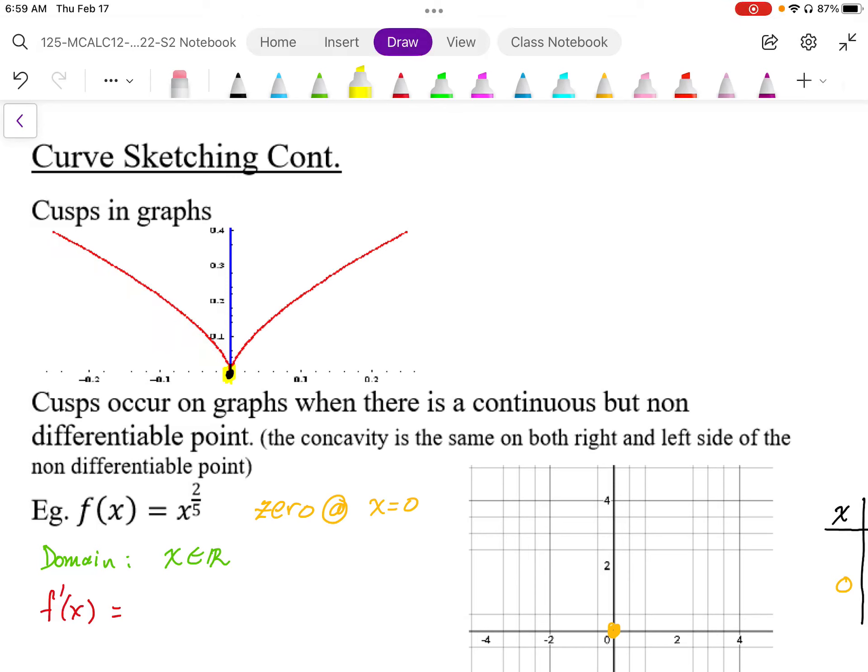We are going to start looking at a few more details of graphs. One of the details we're going to look at is something called a cusp. A cusp is this point that I've highlighted in yellow down here. This is a point where it's non-differentiable. The point exists, so it's continuous, but it's non-differentiable. And we have the concavity does not change across that point. So this is a cusp.